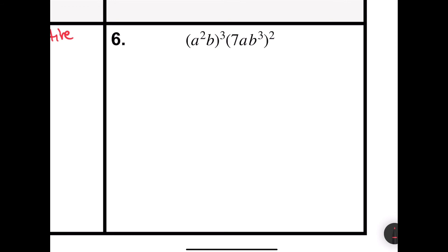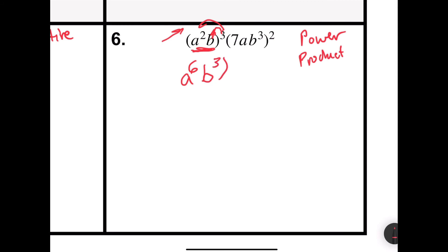Problem number six says a squared b, all raised to the 3rd power, times 7ab to the 3rd, all raised to the 2nd power. There are two different properties in this problem. First, I'm going to use the power property, then the product property — similar to the order of operations, raise to a power first, then multiply. So first, raising a squared b to the 3rd power: a squared raised to the 3rd power, keep the a, 2 times 3 is 6. b raised to the 3rd power — there's a 1 here — keep the b, 1 times 3 is 3.